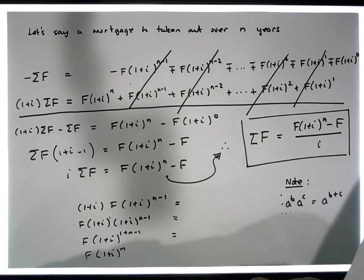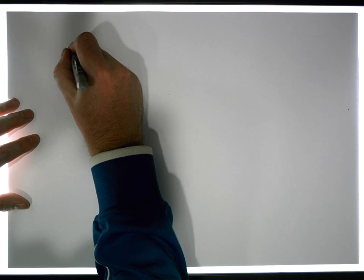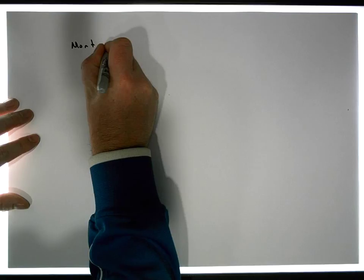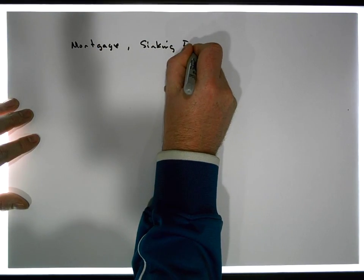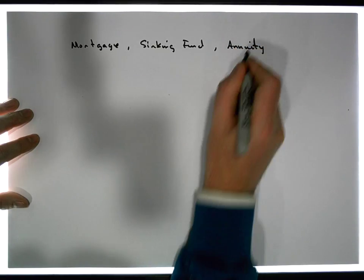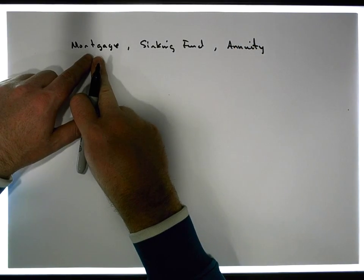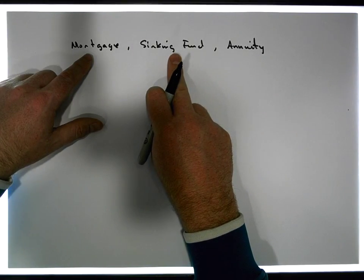Just one thing to keep in mind is that this particular formula that we had, let me write it down again. This particular mortgage annuity, mortgage sinking fund annuity formula. Now, I've only dealt with this based off a mortgage from the rationale, from a mortgage perspective.